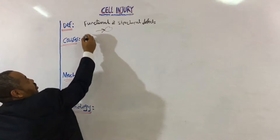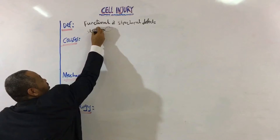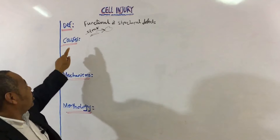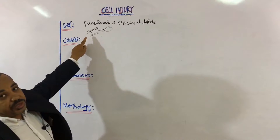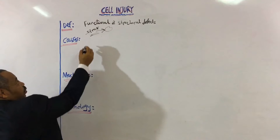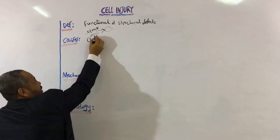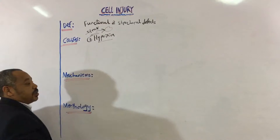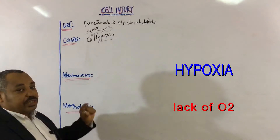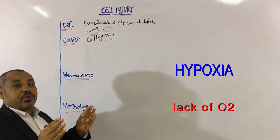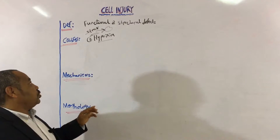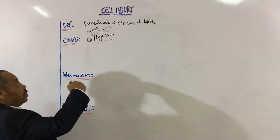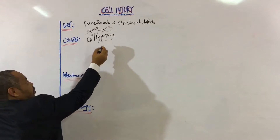So what are the causes of this stress? We have various causes. Number one is hypoxia — lack of oxygen or reduction of oxygen to a specific tissue. I will discuss hypoxia further after finishing all the causes.